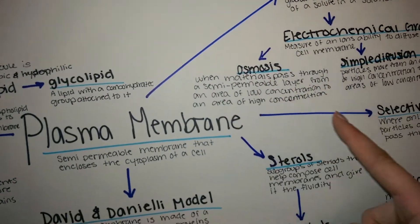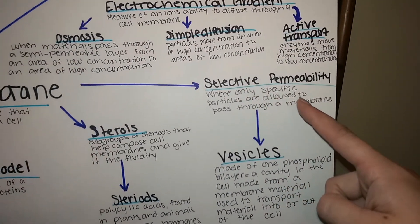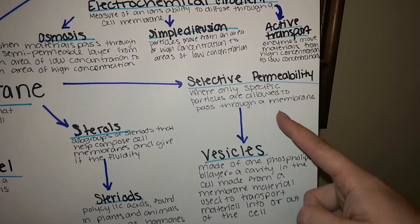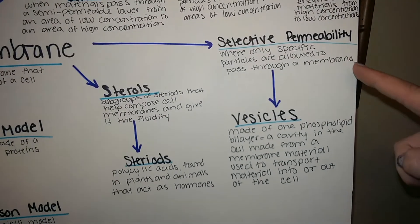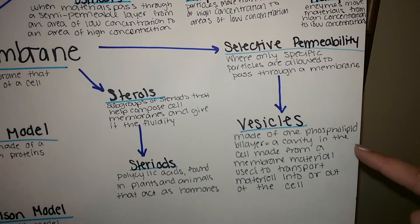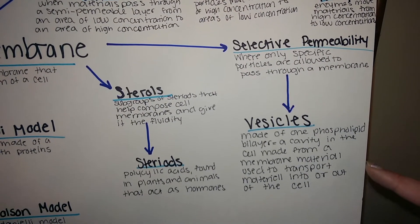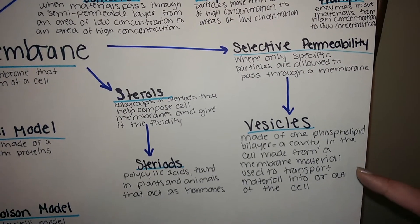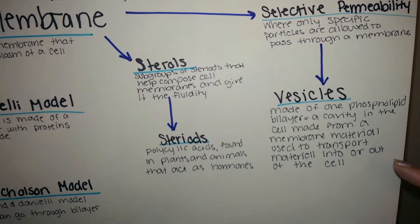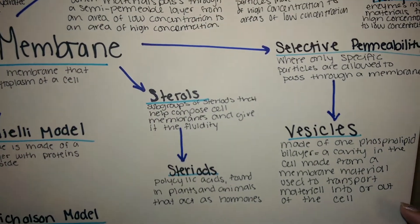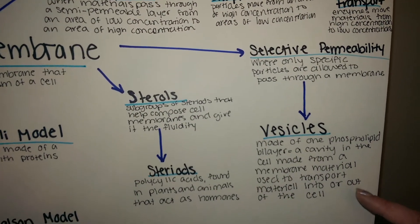Plasma membranes are selectively permeable, which means they can only allow specific particles through the membrane — they can decide what comes in and what goes out. Also part of this is vesicles. Vesicles are made of one of the phospholipid bilayers and are a cavity that the cell makes from membrane material, used to transport material into or out of the cell.